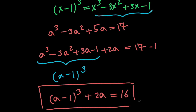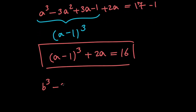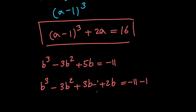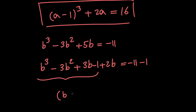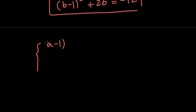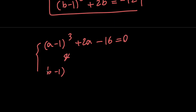Next, let's do the same thing with the second equation. The second equation is b cubed minus 3b squared plus 5b equals negative 11. So I can rewrite the left hand side as b cubed minus 3b squared plus 3b plus 2b equals negative 11, which gives us b minus 1 all cubed plus 2b plus 12 equals 0.